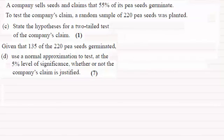So what would that be? Well, if we just put part C here, that claim is going to be that the null hypothesis is that the proportion that germinate is 0.55. And the alternative hypothesis would be, because we're told it's a two-tailed test, would mean that the proportion would be not equal to 0.55. And so that's part C then.